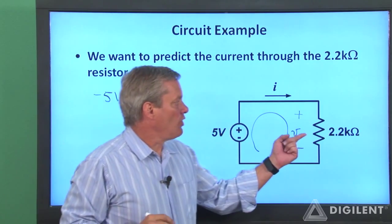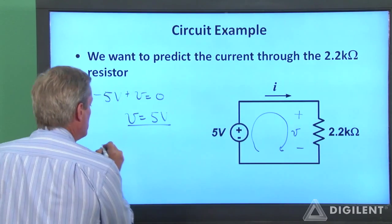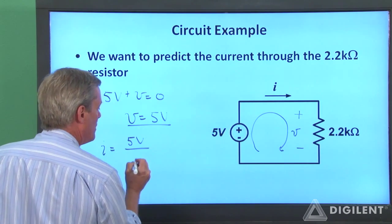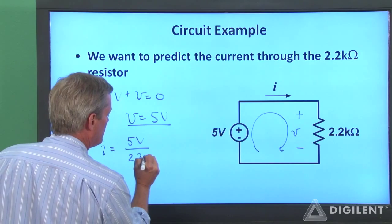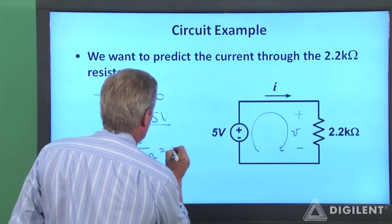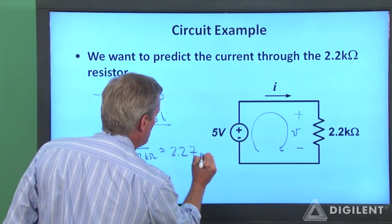Now, we can use Ohm's law and V to find I. So, I is equal to V, 5 volts, over the resistance, 2.2 kiloohms, which is approximately 2.27 milliamps.